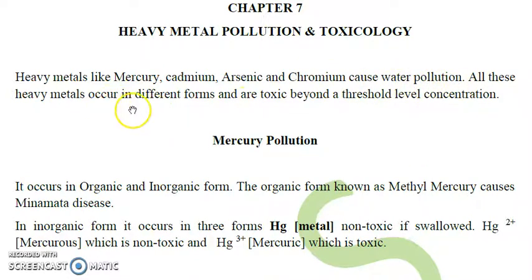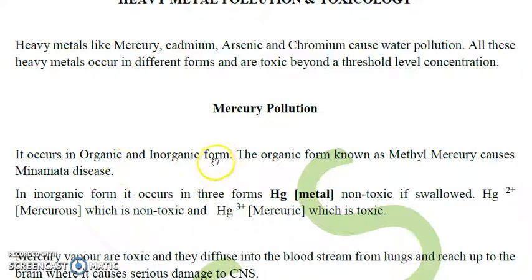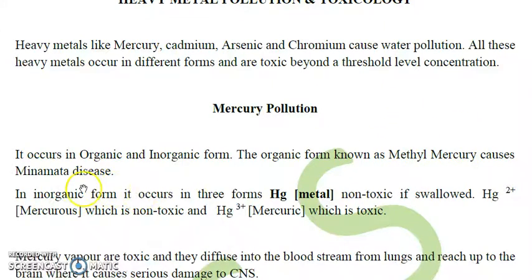First, we will talk about mercury (Hg). Mercury occurs in organic and inorganic forms. On the left hand side we have organic mercury, which is more toxic than inorganic form. The compound majorly responsible for toxicity is methylmercury (CH3Hg), which is also the cause of Minamata disease.